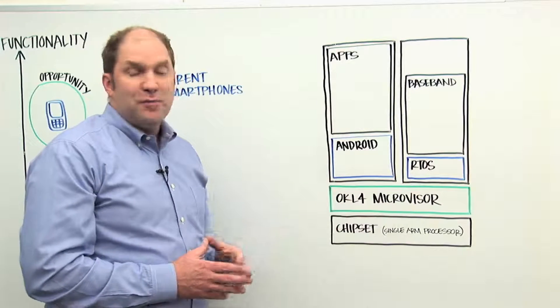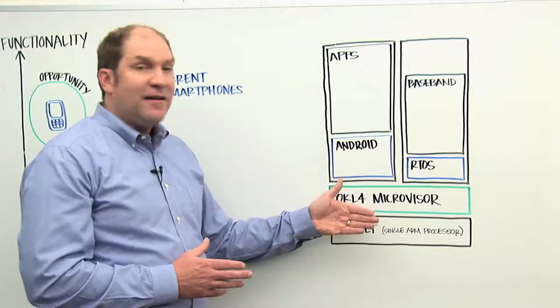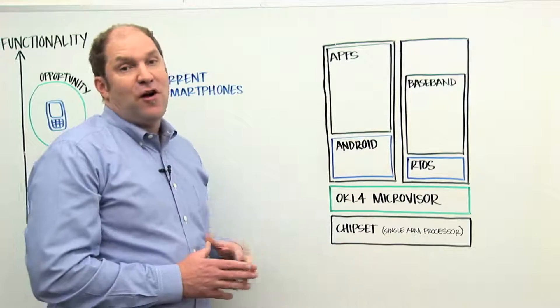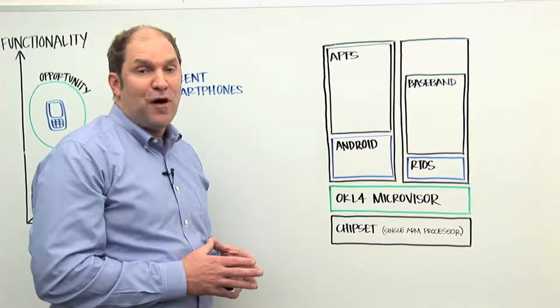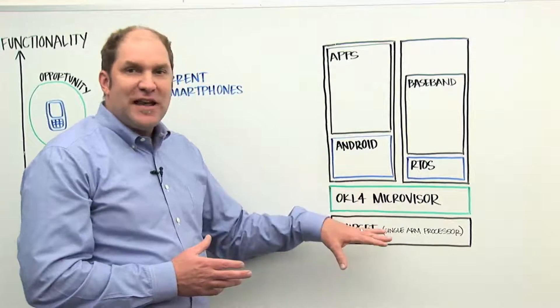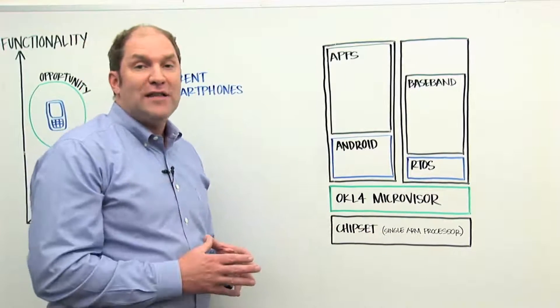And in order to implement this software architecture using traditional methods, you require a relatively expensive mobile chipset that provides a separate ARM processor for each of these two subsystems. Once you introduce mobile virtualization, you can maintain this same software architecture on a chipset that provides only a single ARM processor and therefore is much less expensive to include in the mobile phone.